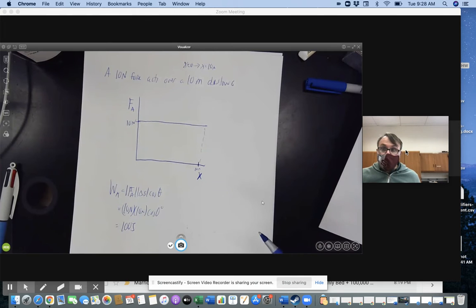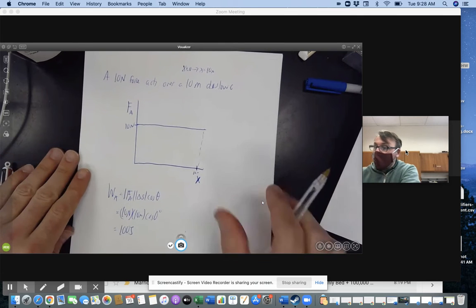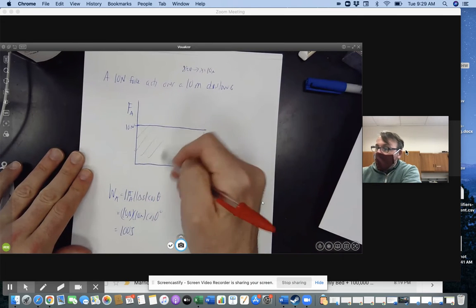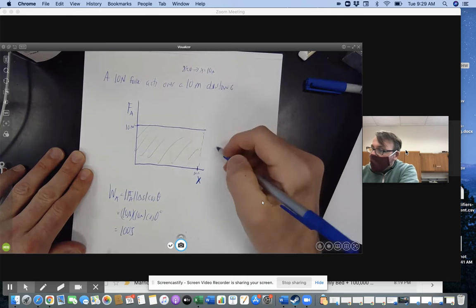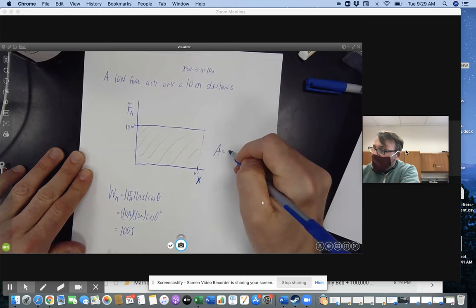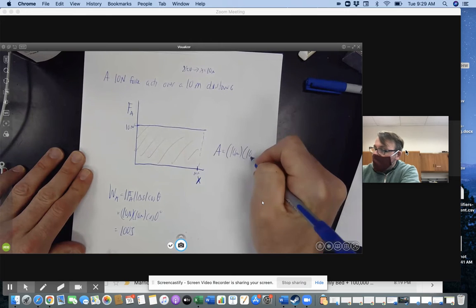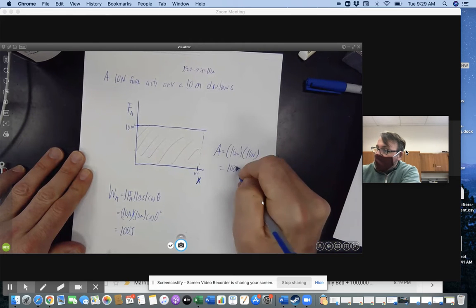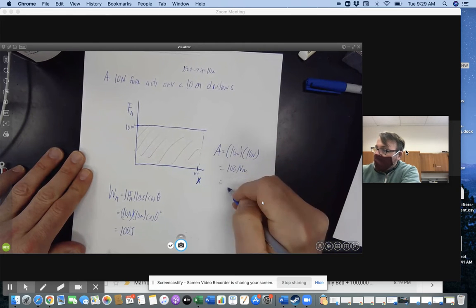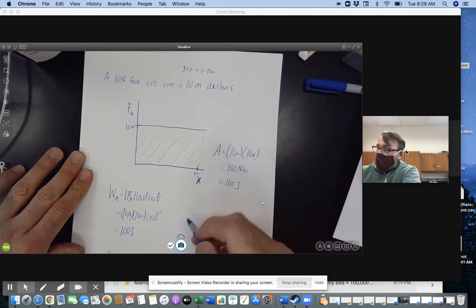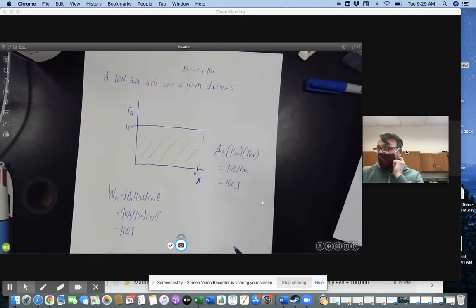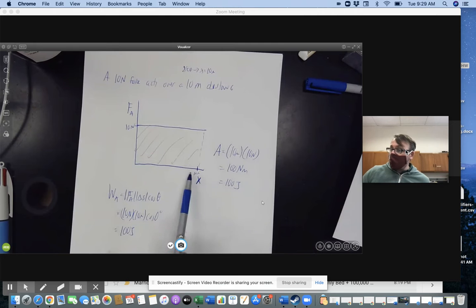The next thing we should think about is slope. But the slope here is zero, so that's not going to say it. The last thing we should think about is area. And if I look at the area of this graph here, the area would be the base is 10 meters. The height is 10 newtons. Notice that gets me 100 newton meters, which is 100 joules. So here, the area from the trend to the position axis gets me that work.